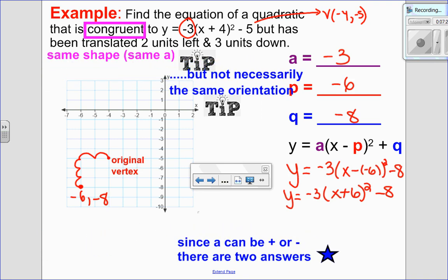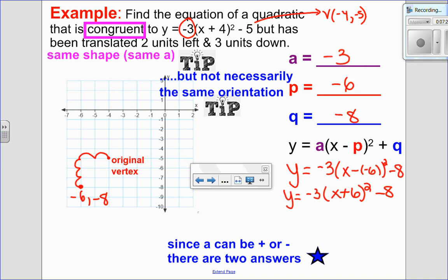Now, it would appear that that is enough of an equation. However, I want to go back to the beginning when I said it was congruent. Congruent means the same shape, not necessarily the same orientation. So what that means is that A could be positive or negative. So this question actually has two possible answers, and I would expect to see both in this case. Y equals positive 3 X plus 6 all squared minus 8. Both of those graphs have the same shape. So whether the graph opens up or down doesn't affect the shape. So since we weren't told that it has a max or a min, we need both answers.